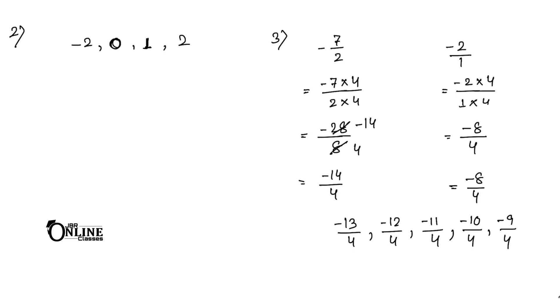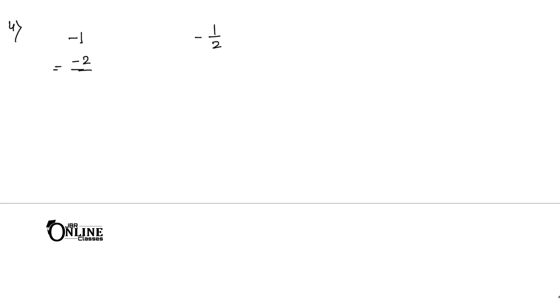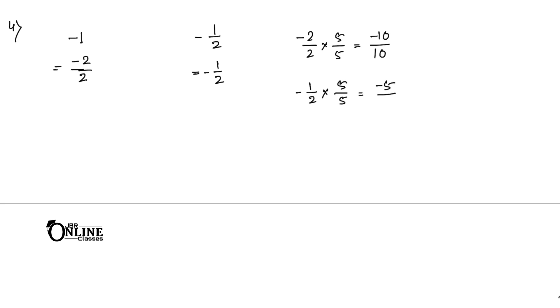Sum number 4: find four rational numbers between -1 and -1/2. First, make the denominators the same — multiplying -1 by 2/2 gives -2/2. Now to find four rational numbers, multiply each by 5 up and down: -1 becomes -10/10 and -1/2 becomes -5/10.